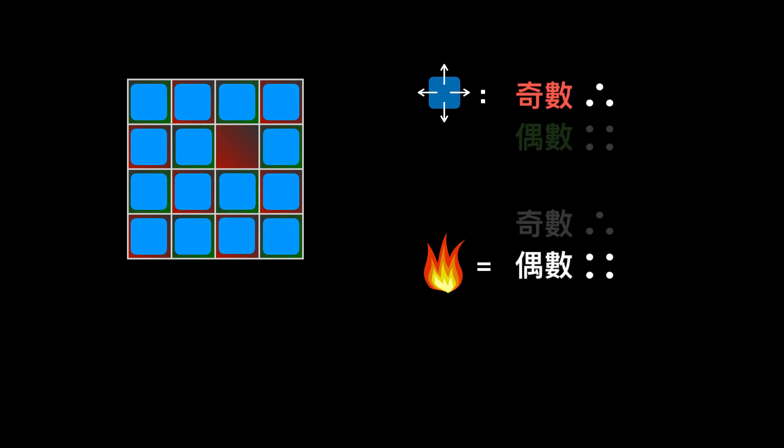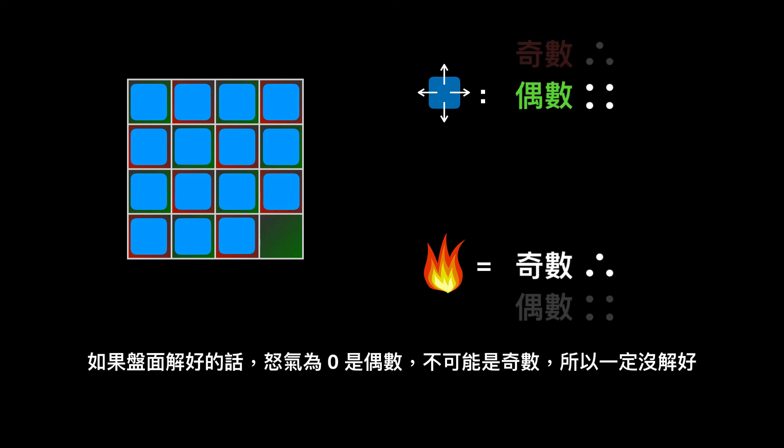And then, you still move even times to make the space back to the bottom right. Therefore, the rage of the puzzle will be an odd number, it cannot be zero. So the puzzle is impossible to solve.